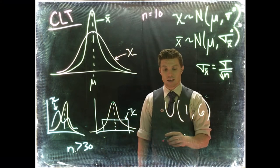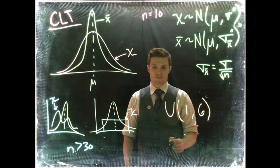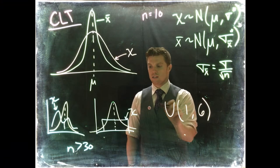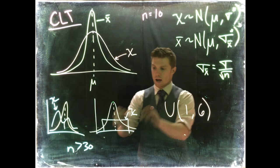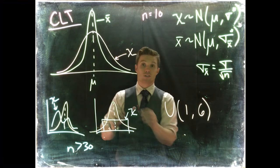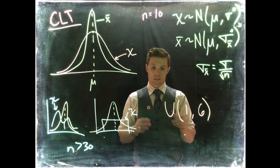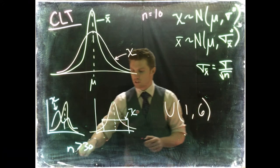So as long as our sample size is like 36 or something. So even if our distribution is like this, the distribution of the sample mean will always be normally distributed, given that the sample size is large enough.